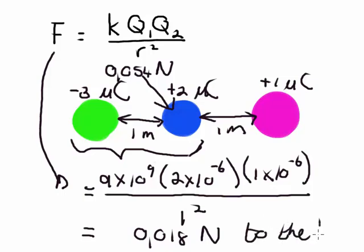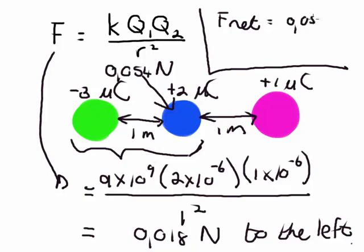So when we go and calculate our net force, F net is going to be equal to the electrostatic force between the green and the blue charge, which was 0.054 Newton, and we're going to say to the left is positive, so this is going to have a positive sign, plus our second electrostatic force between the blue and the purple charge, which was 0.018 Newton, also plus because it's to the left.